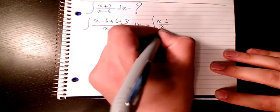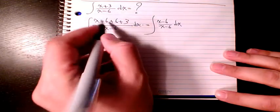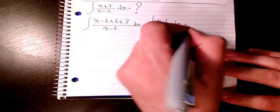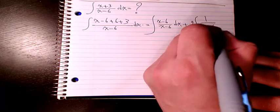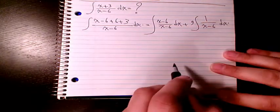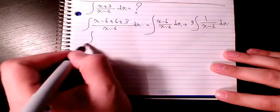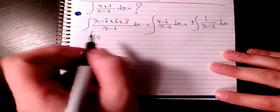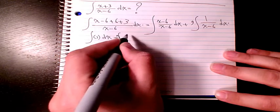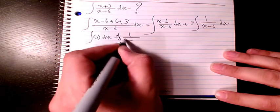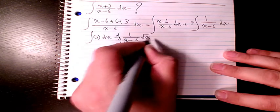It's gonna be x minus 6 divided by x minus 6 dx, and here I have 6 plus 3 which is 9 times 1 over x minus 6 dx. The first part, since the numerator and denominator are the same, it's gonna be 1, and the second part is gonna be 9 times 1 over x minus 6 dx.